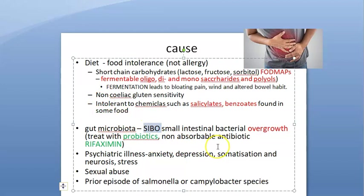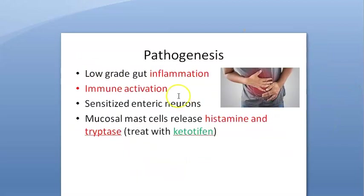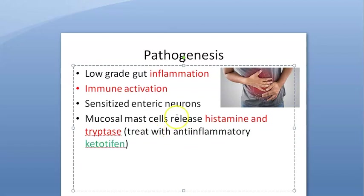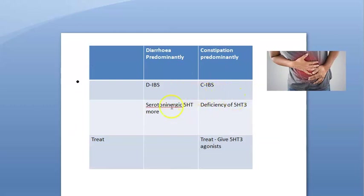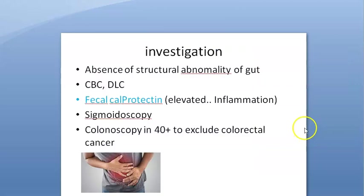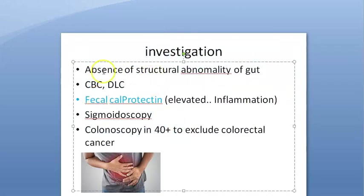Causes include diet (FODMAPs), SIBO (small intestinal bacterial overgrowth), psychiatric illness, sexual abuse, and prior gastroenteritis from Salmonella or Campylobacter. Pathogenesis involves low-grade gut inflammation, immune activation, sensitized neurons, and release of histamine and tryptase by mucosal mast cells — treatable with anti-inflammatory agents like ketotifen. In C-IBS, 5-HT3 is deficient, so a 5-HT3 or 5-HT4 agonist can be given.